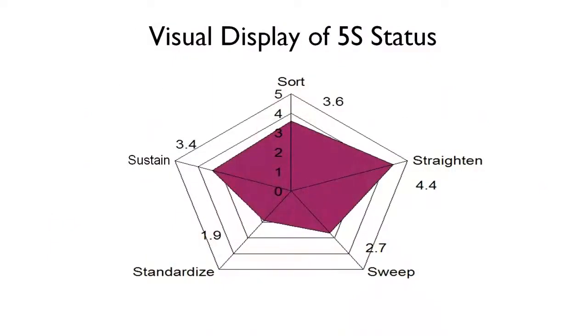For example, this 5S radar chart shows how well the workplace is doing on their 5S score. The goal is to achieve a score of 5 and maintain it through continuous improvement.